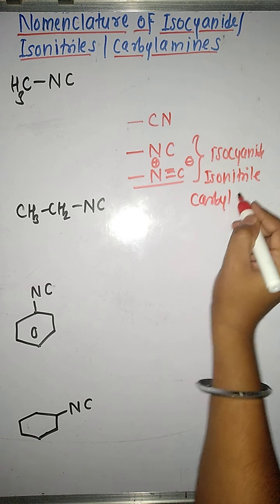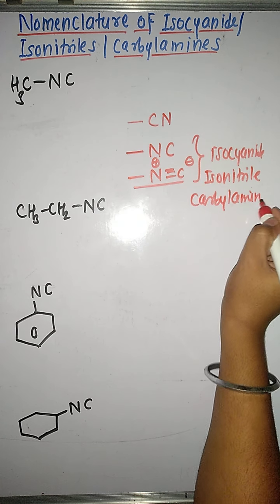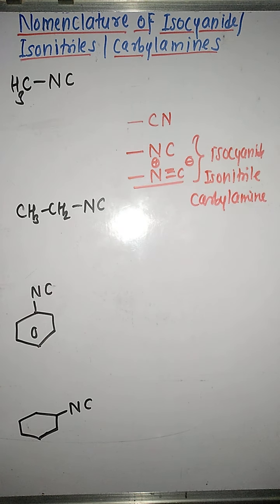You have to remember there is no IUPAC name for isocyanides, isonitriles, or carbilamines. We are only going to name them according to the common name system.